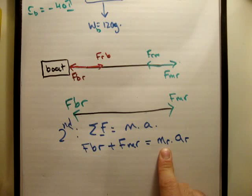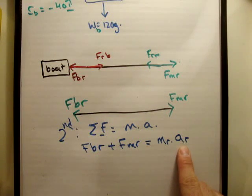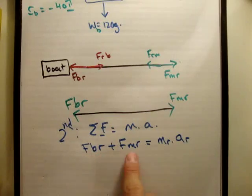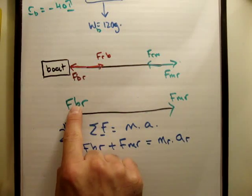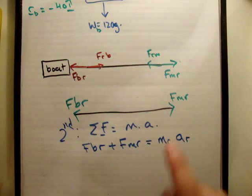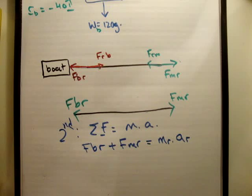What happens if the rope has a mass? That means the rope has an acceleration and it means that these two are not equal because there will be a net force and the rope will be moving as a result.